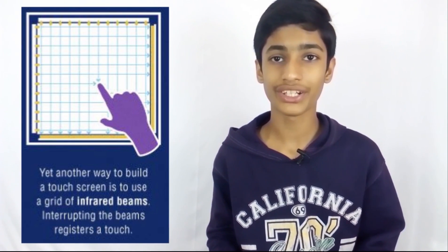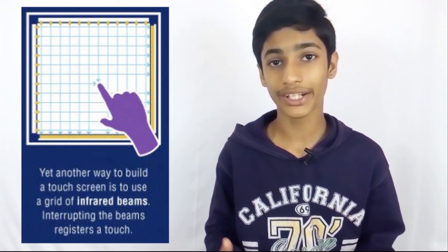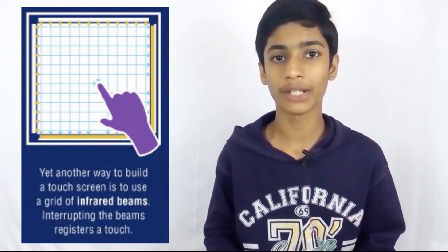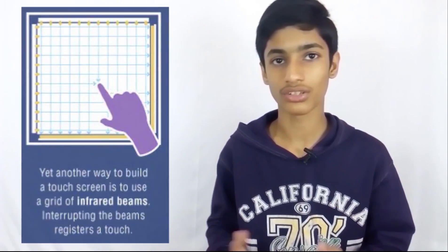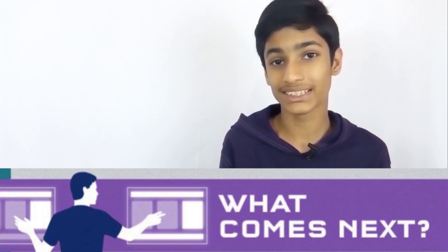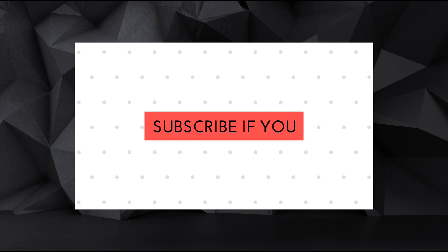Yet another way to build a touch screen is to use a grid of infrared beams; interrupting the beam registers a touch. Interfaces like the Xbox Kinect may hold the answer. The next generation of interfaces may rely completely on gestures and vocal commands. We may not ever need to touch anything again.